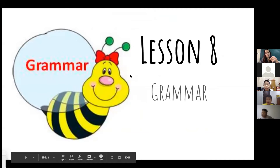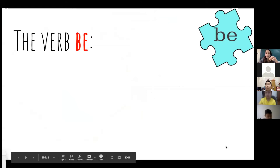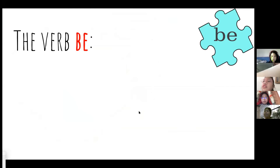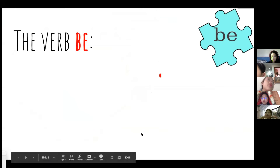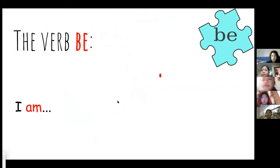We're going to talk about lesson 8 grammar, so first of all let's review our verb 'be.' The verb to be has a few different forms, and we're going to talk about the present tense forms. For example, when using the pronoun 'I,' the verb 'be' changes to 'am' — so I would say: I am happy, I am hungry, I am sleeping.